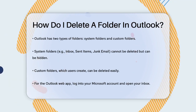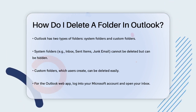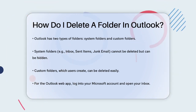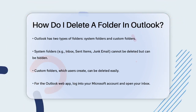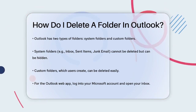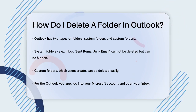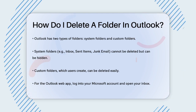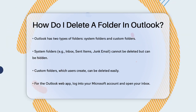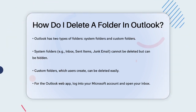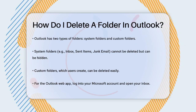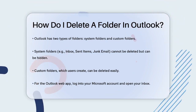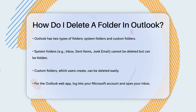First, it's important to know that there are two types of folders in Outlook: system folders and custom folders. System folders, like your inbox, sent items, and junk email, are essential for your mailbox to function, so you can't delete them. However, you can hide them if you don't want to see them all the time.